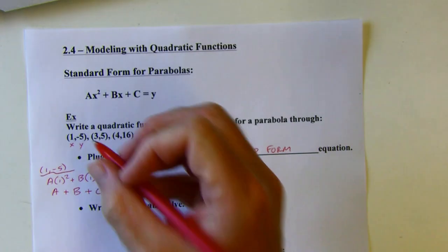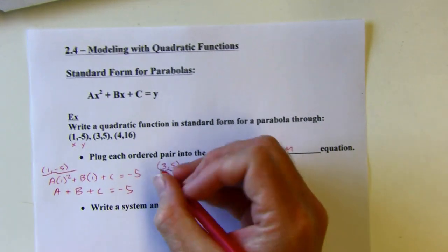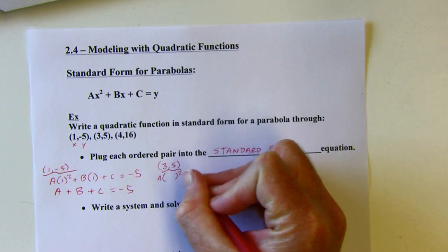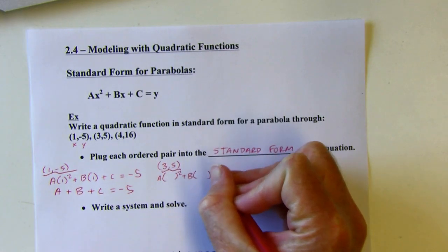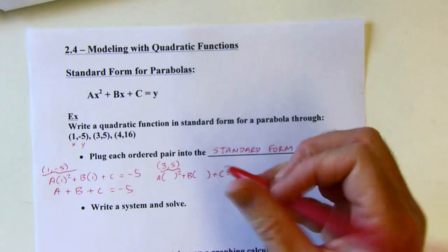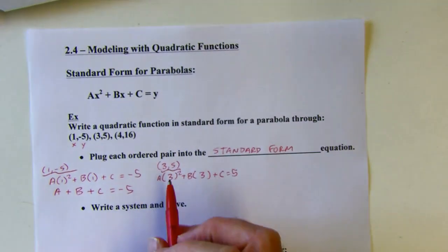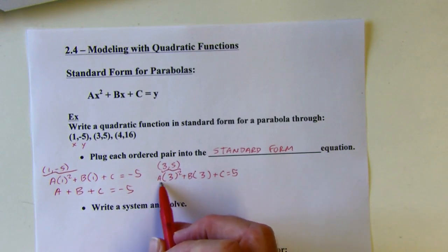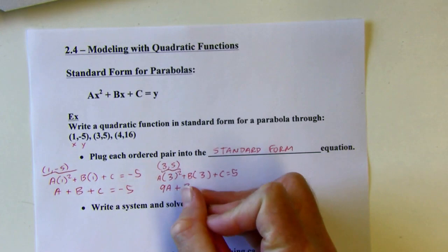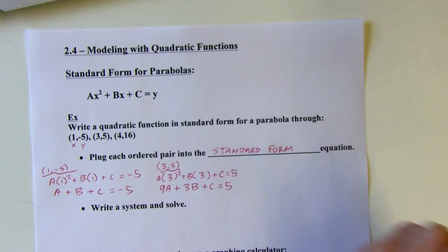I'm going to repeat the process with the two other x, y pairs. Let's do this with the point (3, 5). I'm putting in 5 for y and 3 for x. Remember, you're just squaring the 3, not squaring the a. So this is going to be a times 9, or 9a. And then I've got 3b plus c equals 5.